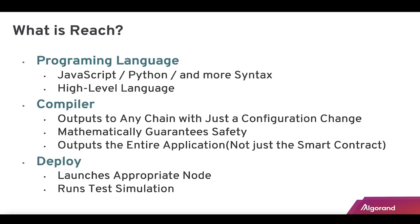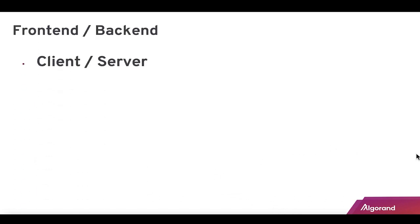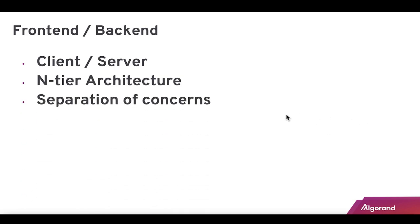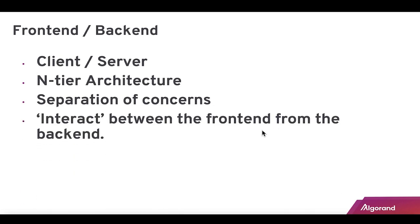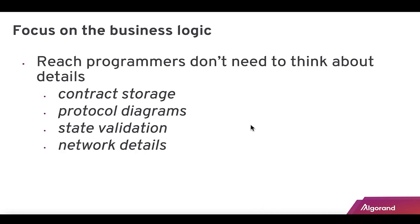Reach is a programming language — JavaScript, Python, and more languages can be used. It's also a compiler, and it can output to any chain with just a configuration change. There are two pieces: front end and back end — separation of concerns. The focus is on business logic, which is really nice. It's at an even higher level than the Python SDK example. Reach programmers don't need to think about contract storage, protocol diagrams, state validation, or any network details.